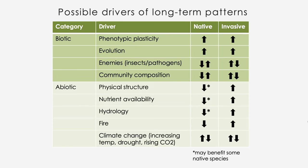For abiotic factors including physical structure, nutrient availability, hydrology, and fire, if those changes are due to the effects of the invader, we would generally expect a negative effect on native species and a positive effect on the invader. For climate change, it's really a mix of possible mechanisms because of different factors including temperature, drought, and rising CO2, so interactions can change in multiple directions.